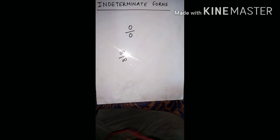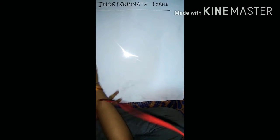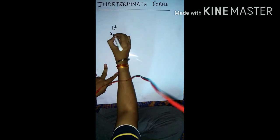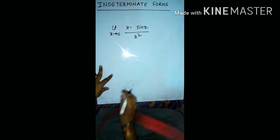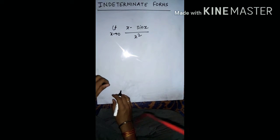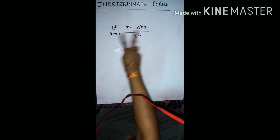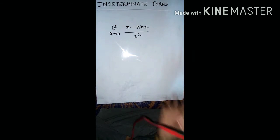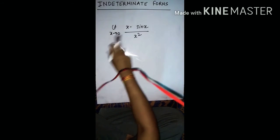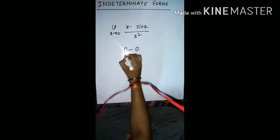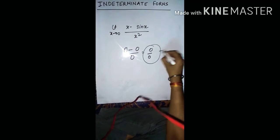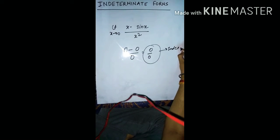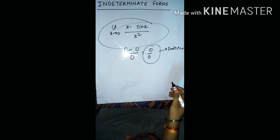Let me explain briefly how the indeterminate form comes. Take the example: limit x tends to 0 of (x minus sin x) upon x squared. If you put the value of x in the limit, you get 0 minus 0 upon 0, which gives 0 upon 0 form. This is the indeterminate form, and this is what we are going to deal with in this chapter.